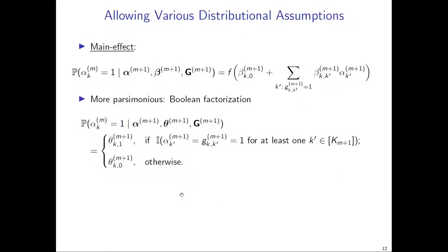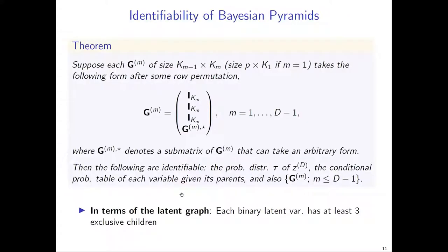A question was raised about the number of levels the latent variables can take. In the preprint this talk is based on, we actually assumed that the latent variables are all binary. But we have extended the results to latent variables that can take an arbitrary number of categories. The three pure children requirement doesn't really rely on the binary nature of the latent variable.